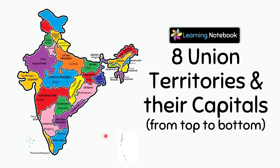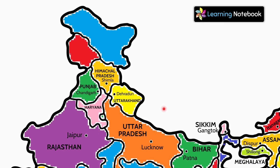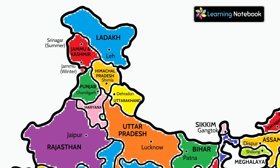Now let's learn the 8 union territories and their capitals from top to bottom. This is Ladakh and its capital is Leh. This is Jammu and Kashmir — it has 2 capitals: Srinagar in summer and Jammu in winter.